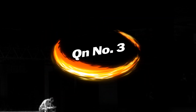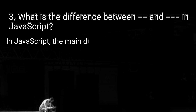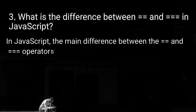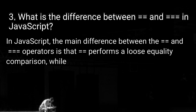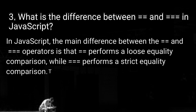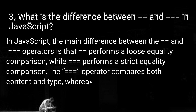Question number three: what is the difference between double equal and triple equal in JavaScript? The main difference is that double equal performs a loose equality comparison while triple equal performs a strict equality comparison. The triple equal operator compares both content and type, whereas double equal compares only content.